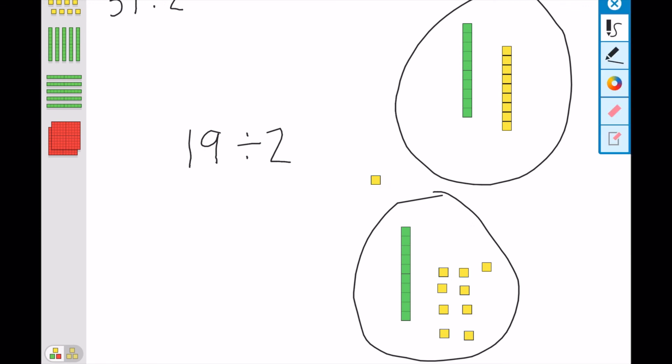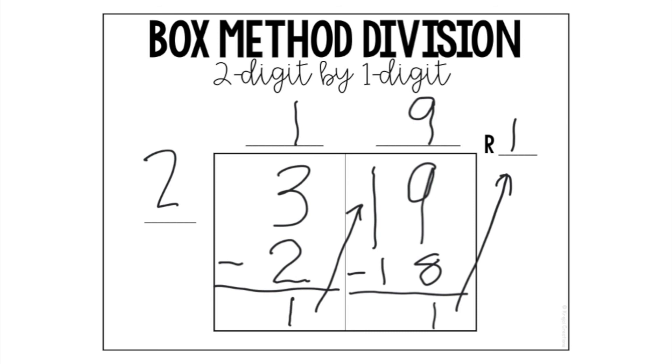And you can see, again, that one right here. That little one, he's left over. So that means my answer is how many is in each group? 19. And there's a remainder of just one that couldn't be divided into the groups. And as you can see here in the box method as well, that's the answer I got. The answer is right here on top. 19 remainder 1.